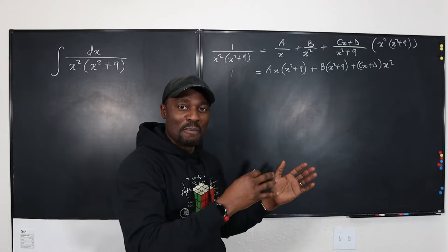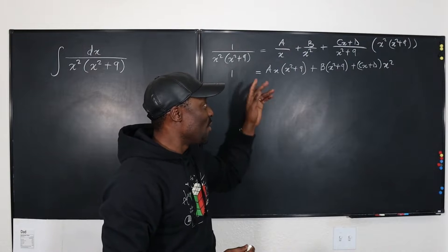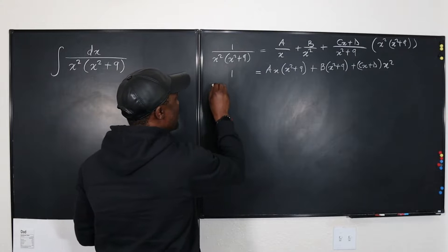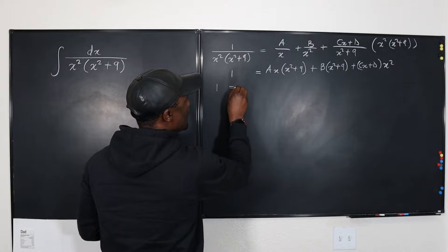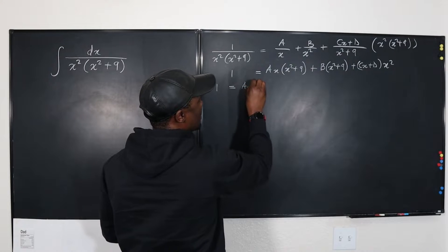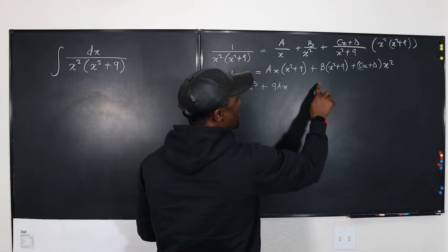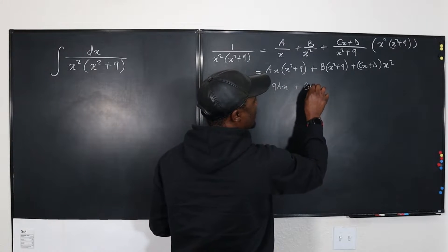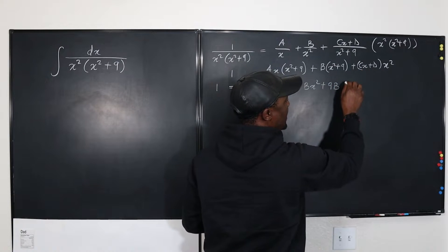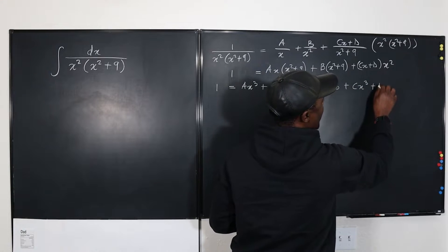So this is the equation I'm going to be solving. Let's clean this up. So I'm going to have 1 equals, if I multiply this out: ax cubed plus 9ax, plus bx squared plus 9b, plus cx cubed plus dx squared.